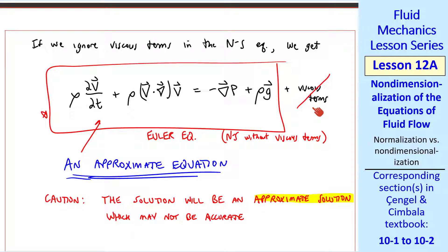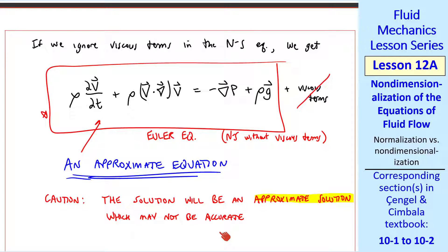I caution that the solution will be an approximate solution which may not be accurate everywhere. For example, the viscous terms may be negligible in the bulk of the flow, but very close to the wall these viscous terms are always important. So flow near the wall may not be very accurate, which can lead to errors in where the flow separates and may change the overall behavior of the flow. We have to be very careful in applying these approximations.